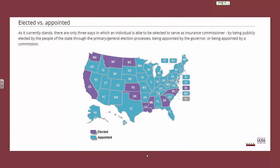The state insurance commissioner is the face of the insurance department and can be a very public and important state government role. In the state of Louisiana, the insurance commissioner is elected. As you can see from this map, most states appoint their insurance commissioners — appointed by the governor or in some cases by a commission. There are only ten states currently where the insurance commissioner is elected.